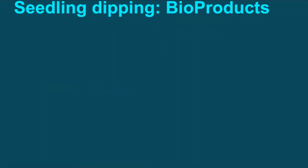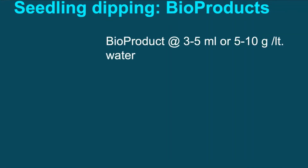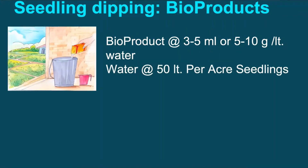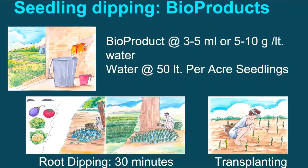The next method is seedling dipping. Use 3 to 5 ml of liquid or 5 to 10 grams of powder formulation per litre of water. About 50 litres of water will be sufficient for seedlings to be planted in 1 acre of land. Add bioproducts in water, mix well, and dip the seedling roots for 30 minutes, then transplant in the field.